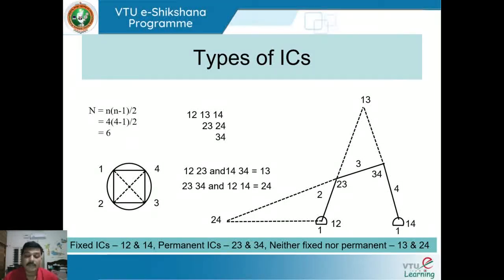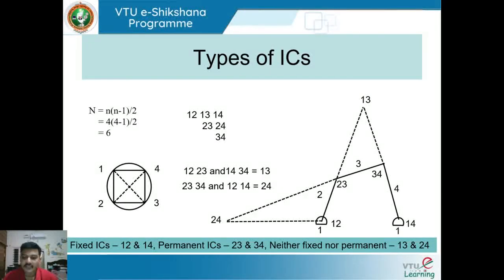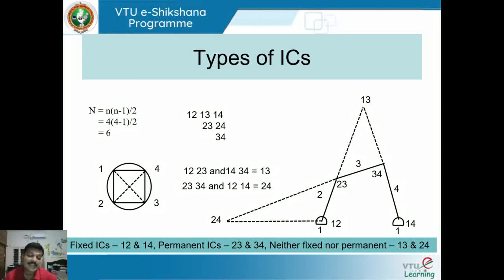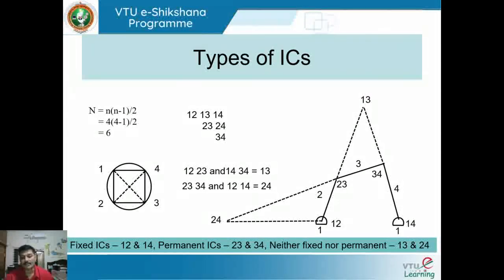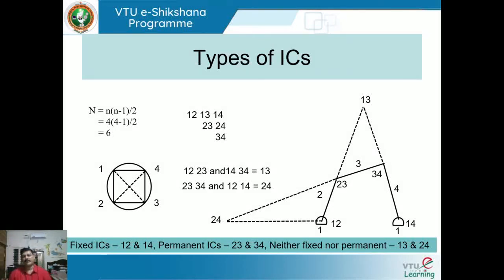ICs 1,3 and 2,4 are neither fixed nor permanent. They change position as links 2, 3, and 4 move, and they are not permanent joints of the mechanism. So these ICs are classified as neither fixed nor permanent ICs.